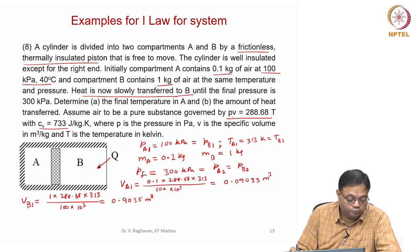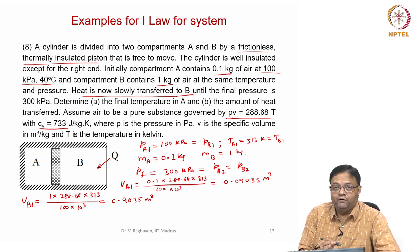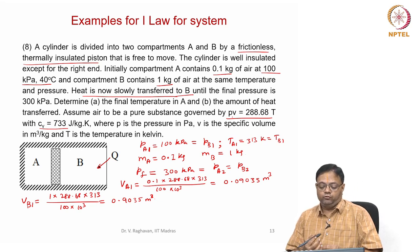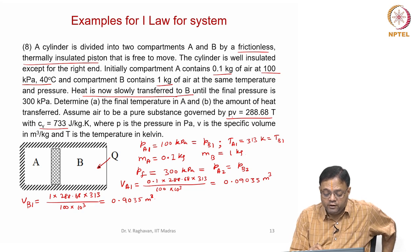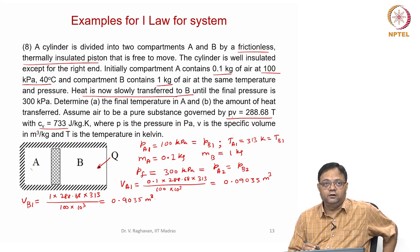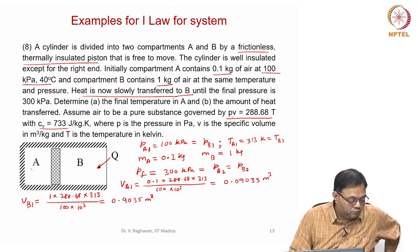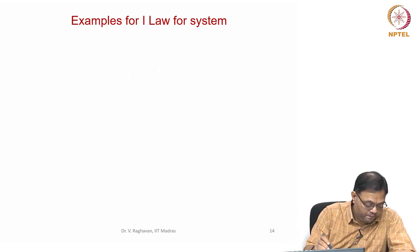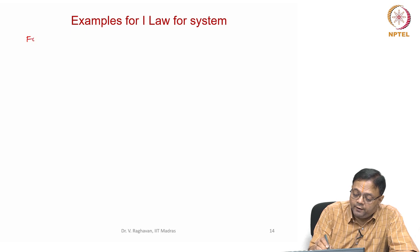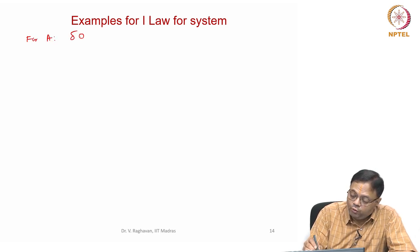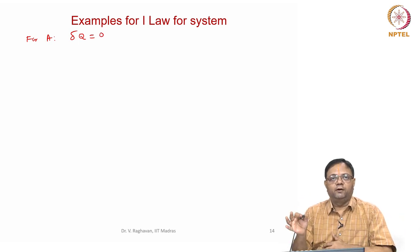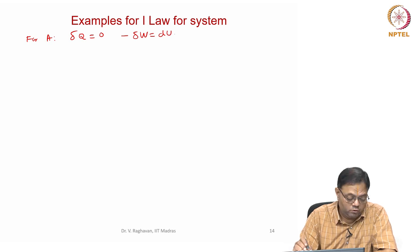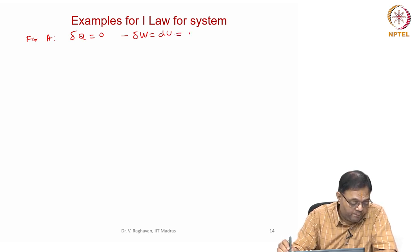Because heat is added to B and pressure increases, the piston moves left and the air in A undergoes adiabatic compression. For compartment A, applying the first law: delta Q = 0 because all sides including the piston are adiabatic. So minus delta W = dU = m × cv × dT, and delta W = p dV.